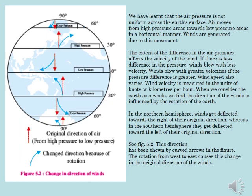The extent of the difference in air pressure affects the velocity of the wind. If there is less difference in the pressure, winds blow with less velocity. Winds blow with greater velocities if the pressure difference is greater. Wind velocity is measured in the units of knots or kilometers per hour.